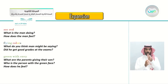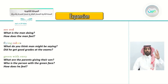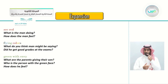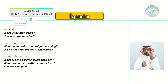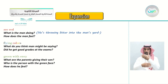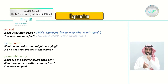The first idiom is 'see red.' What is the man doing? He is throwing litter or garbage into the man's yard. How does the man feel? From the idiom 'see red,' he feels angry - he is seeing red. When you are angry, your face turns red, so he is seeing red.